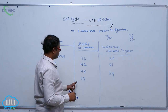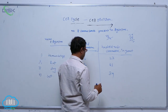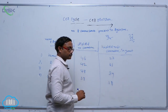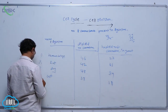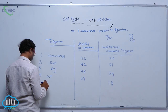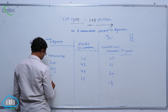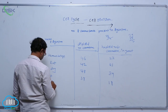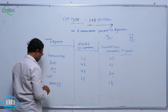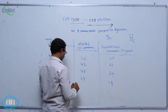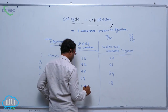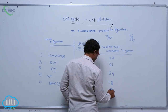The diploid number of chromosomes in cat is 38. The haploid chromosome number is 18. After that, housefly. The diploid number of chromosomes is 12, and the haploid number of chromosomes is 6.